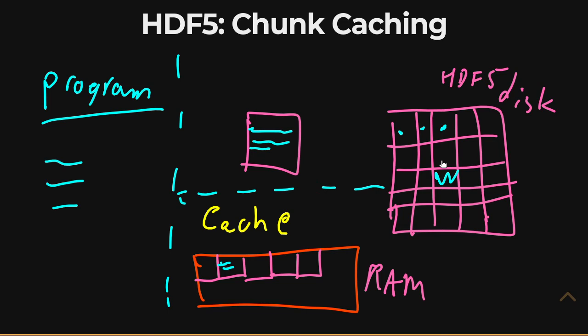There are parameters to choose: how big is this cache going to be, how many chunks can it hold, and what's the policy for when the chunk cache gets full? If your chunk cache is full of chunks and you want to read one more, one of the chunks in the cache has to be evicted so you can fit the next one. Decisions about which chunk to evict, along with cache size and capacity, all play into parameters that can be set about how HDF5 manages its chunk cache.